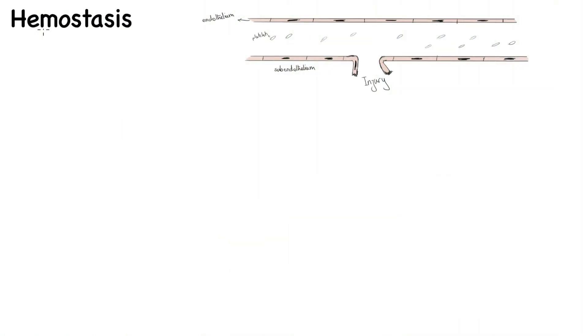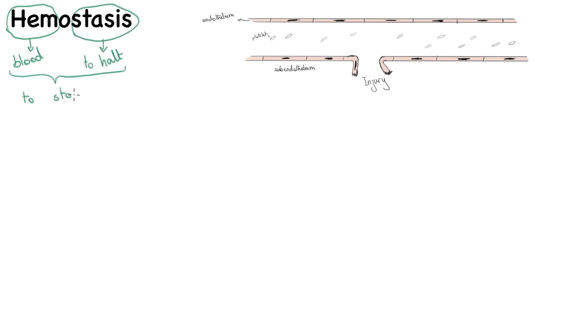Hemostasis comes from Greek. It consists of heme, meaning blood, and stasis, which means to halt or to stop. So together, they mean to stop the bleeding.